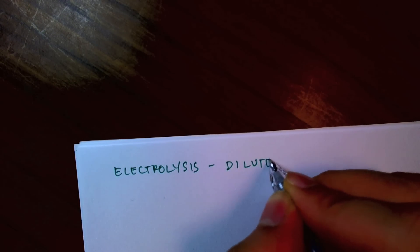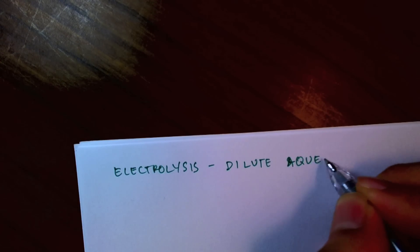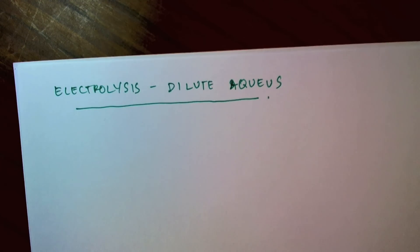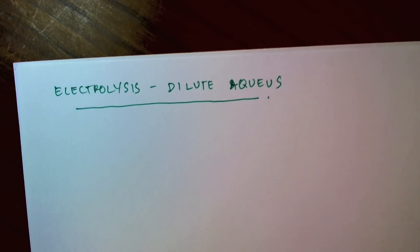In the last two videos, we looked at the electrolysis of a concentrated aqueous solution. In this video, we'll look at the electrolysis of a dilute aqueous solution. In a dilute solution, the amount of the species we're interested in is very much less than in a concentrated solution. For example, a dilute sugar solution would not taste very sweet, but a concentrated sugar solution would taste very sweet because it has lots of sugar versus water, whereas the dilute solution has very little sugar and lots of water.